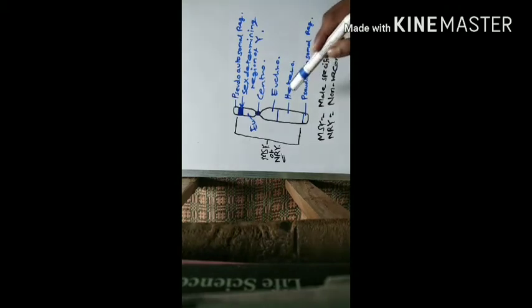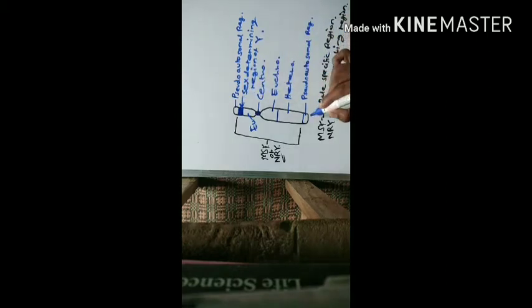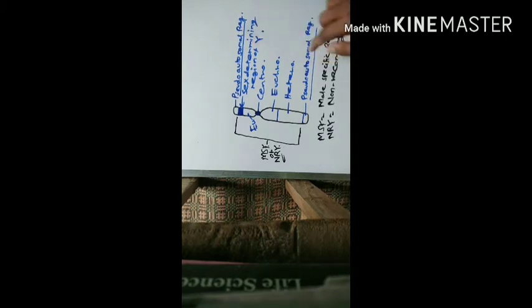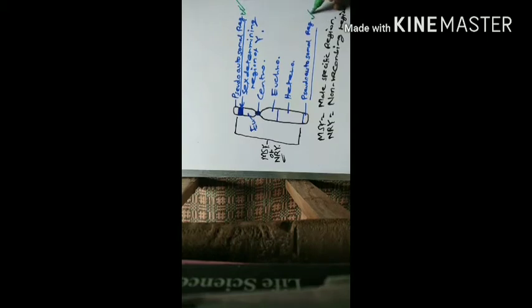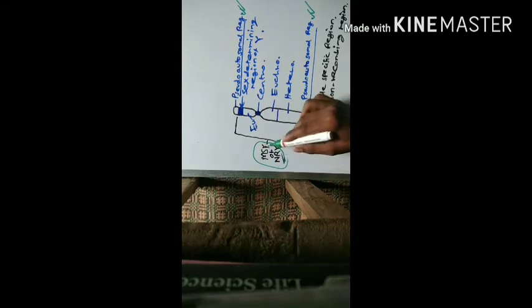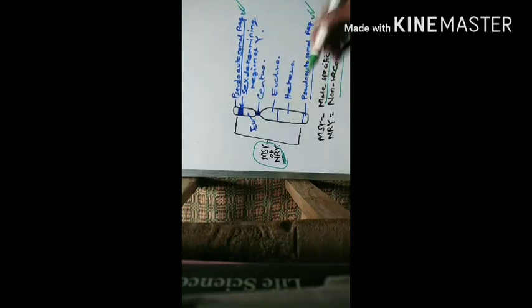This is the total structure of the Y-chromosome. There are two arms — the short arm and the long arm. At the ends of both arms, there is the pseudo-autosomal region. The pseudo-autosomal region shares homologous structure or homology with the X-chromosome, and these regions can synapse with the X-chromosome during meiosis. The rest of the part, called the male specific region of Y or non-recombining region of Y, cannot recombine or synapse with the X-chromosome during meiosis. But the pseudo-autosomal regions can recombine with the X-chromosome.